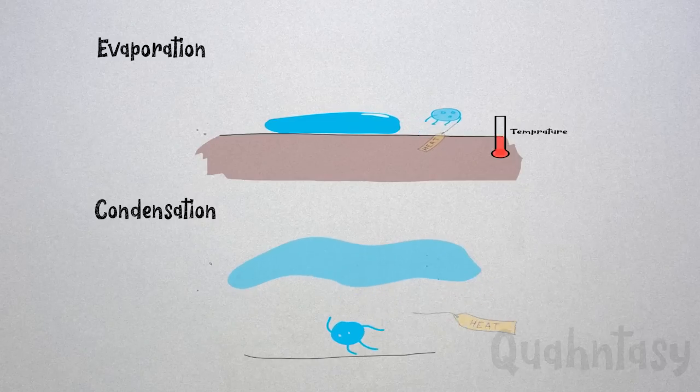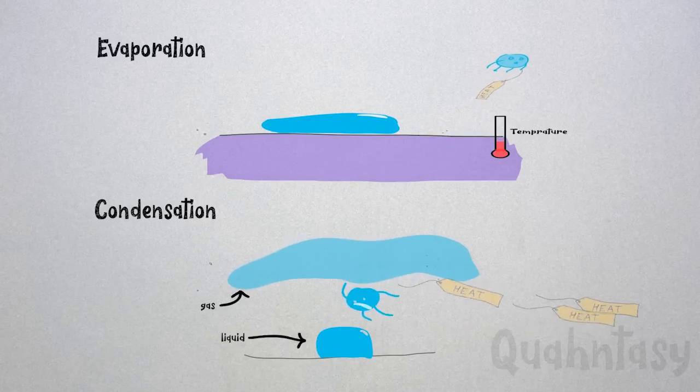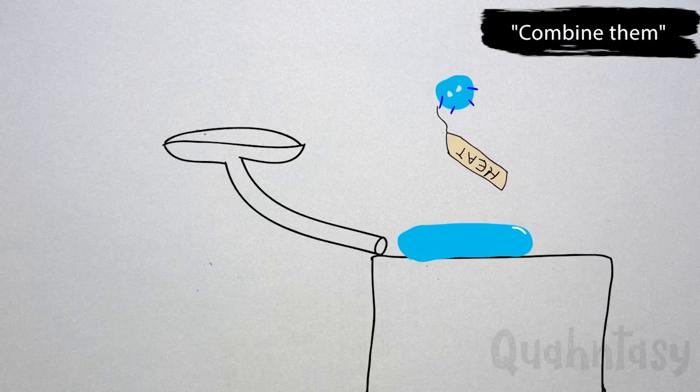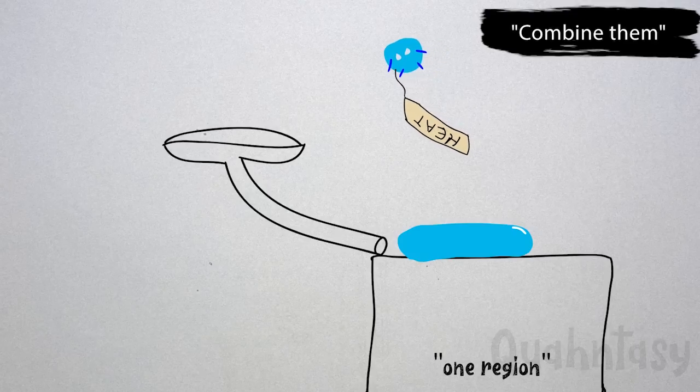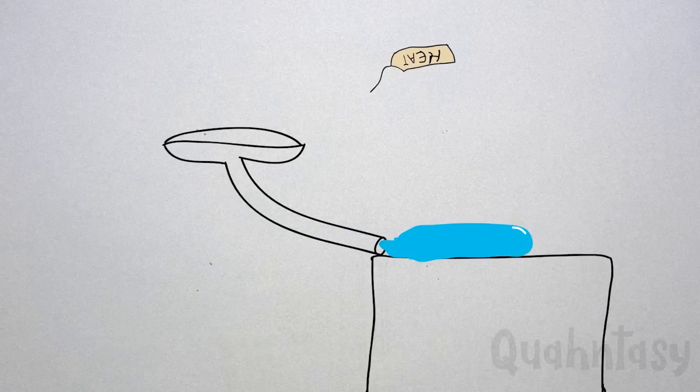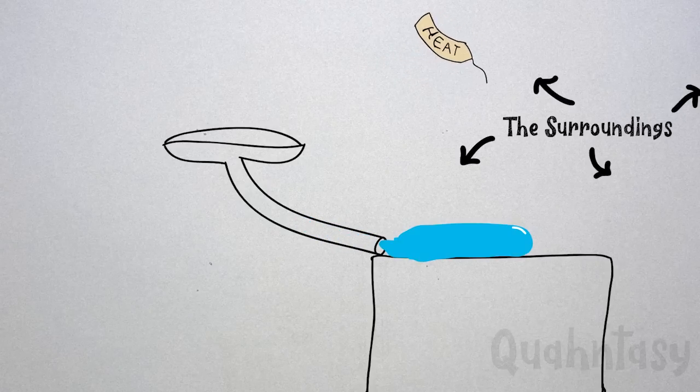Now all we have to do is combine them in such a way that heat is taken out from one region, that can be inside of a refrigerator or some cold storage unit, and this heat is given out to another region. In our case it's the surroundings.